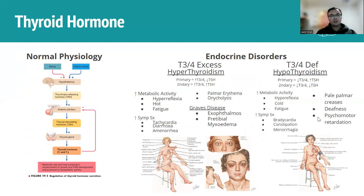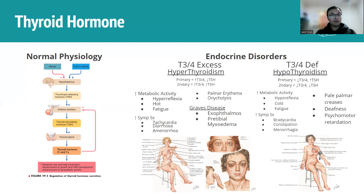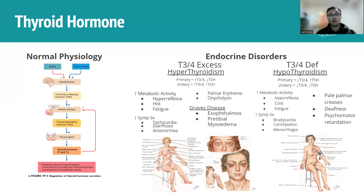Next up is thyroid hormone — a very high-yield topic. Excess gives hyperthyroidism, which comes in primary and secondary types. On thyroid function tests, we measure T3, T4, and TSH. Primary refers to pathology at the level of the thyroid itself, while secondary refers to pathology at the anterior pituitary. In primary hyperthyroidism, the thyroid overproduces T3 and T4, so the anterior pituitary reduces TSH via negative feedback.